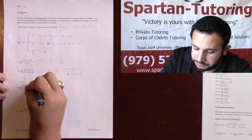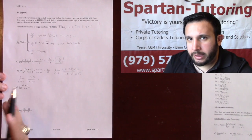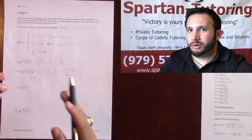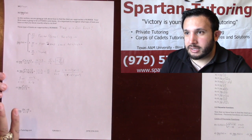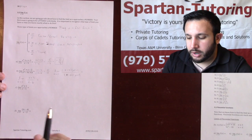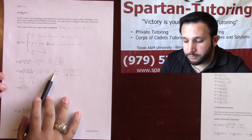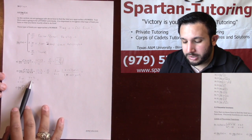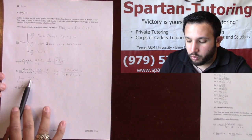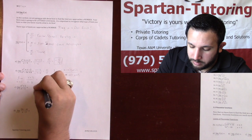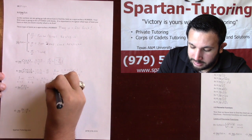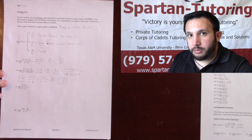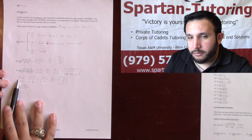A lot of professors are sticklers about notation — I've seen professors take points off because students didn't write 'limit' in the right spots. If you have a worked problem, always put 'limit as x approaches 1' in front until you plug the number in for the last time. Once I plug 1 in for the last time, I get one plus two over one minus eight, which is three over negative seven, or negative three-sevenths.